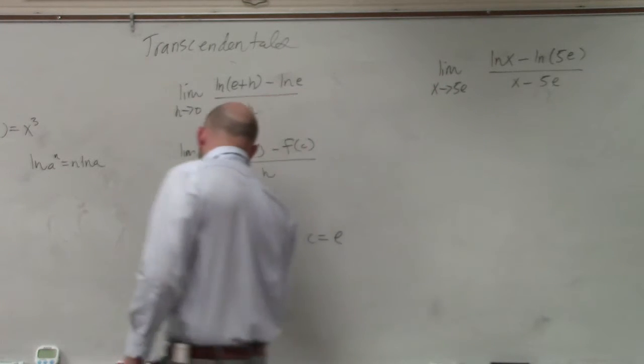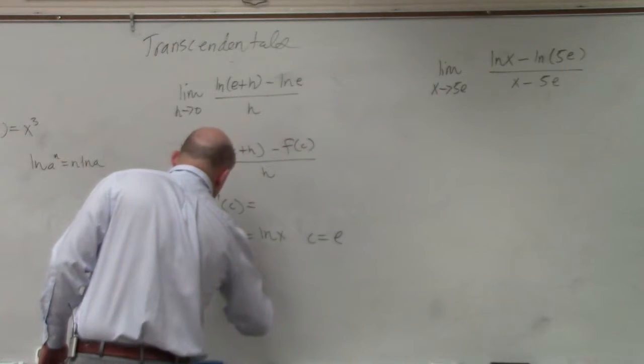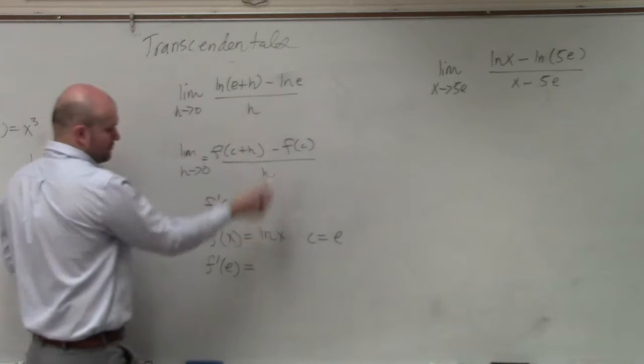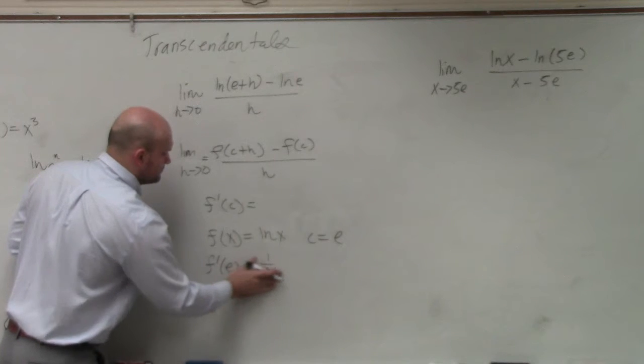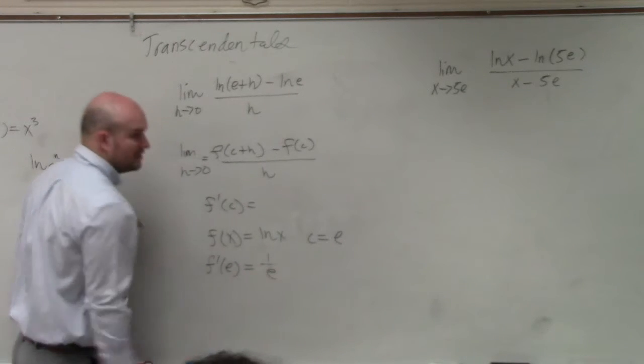So really what I'm doing is taking f prime of e. The derivative of ln of x is 1 over x, which is really just going to be 1 over e.